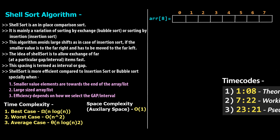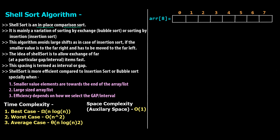Shell sort is an in-place comparison sort. Just like insertion sort, selection sort, and bubble sort, shell sort is a comparison sort, which means some kind of comparison happens between two elements. For example, if our array is something like 51, 7, 10, 11, 12, 17, and 18 - a comparison sort would compare elements in some way, and depending on whether you want ascending or descending order, those elements will be swapped or replaced.